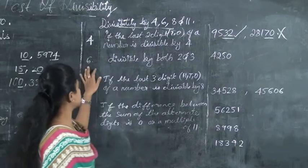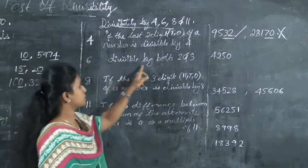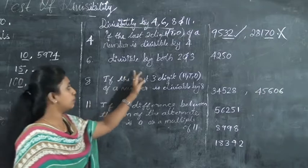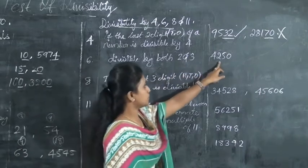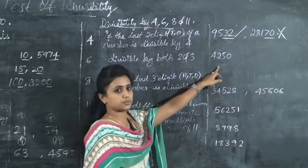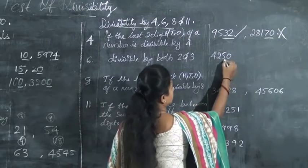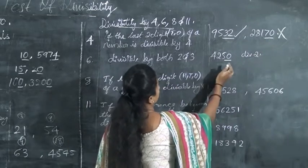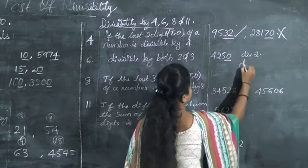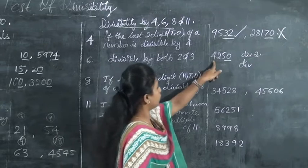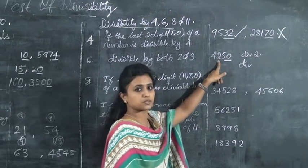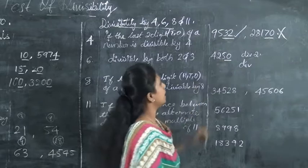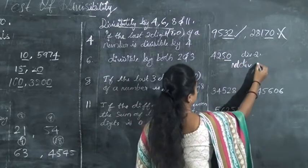For 6: a number is divisible by 6 if it is divisible by both 2 and 3. For example, 4250: the last digit is 0, so it is divisible by 2. Now check divisibility by 3 — the sum of digits is 4 plus 2 plus 5 plus 0, which is 11. Since 11 is not divisible by 3, 4250 is not divisible by 6.